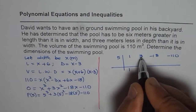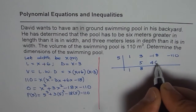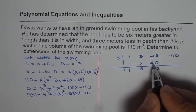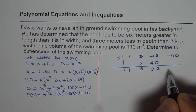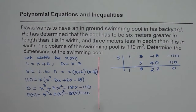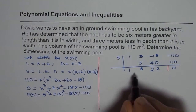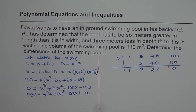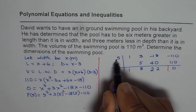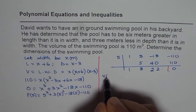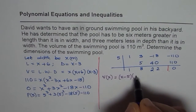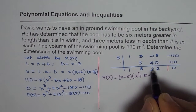Bring down 1, multiply to get 5, add to get 8, multiply to get 40, add −18 + 40 to get 22, multiply 22 by 5 to get 110, and as expected the remainder is 0. So the quadratic factor we obtain is x² + 8x + 22. We can write the volume as (x − 5)(x² + 8x + 22).